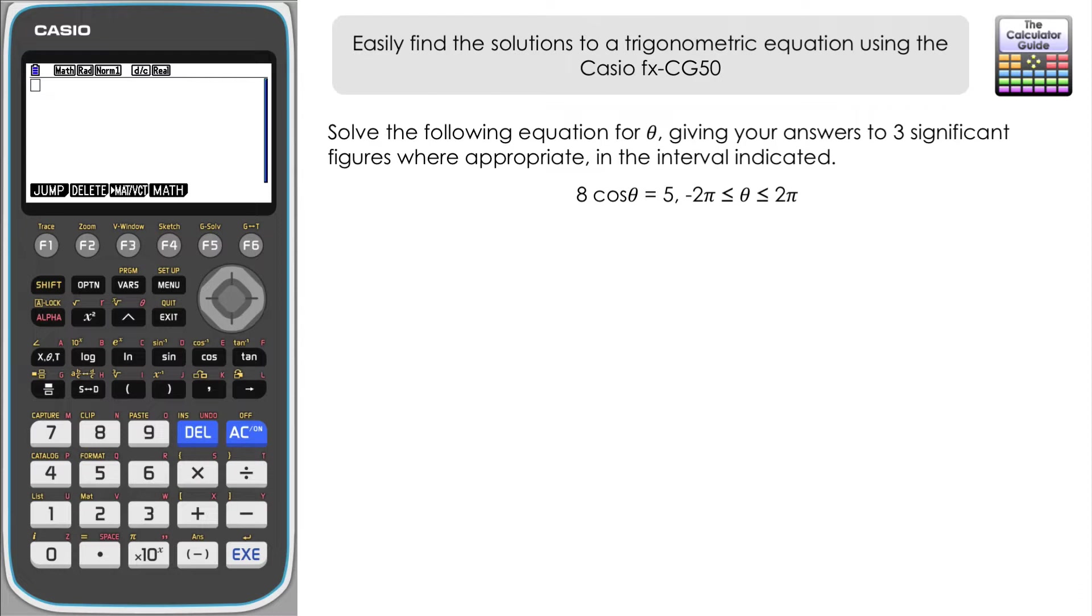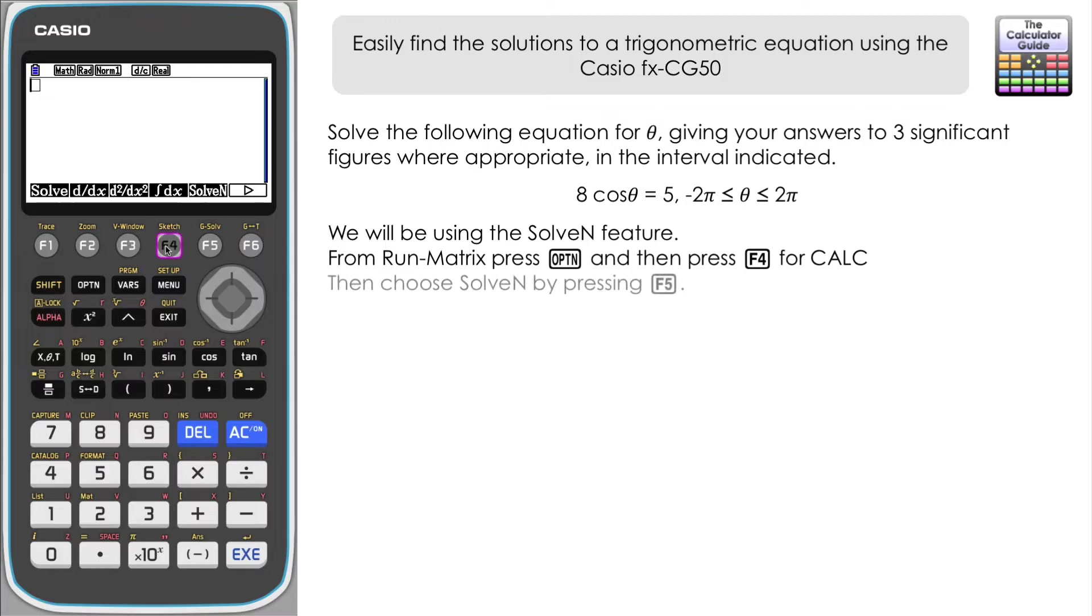Now the feature that we're going to be using on this is SolveN. I'm not quite sure what the N stands for, it might be Solve Numerically or Solve for Numbers because we do get a numerical solution from this. So let's just find out where that is. If you press Option and then we want to choose the option Calc, so it would be F4 for Calc, and then in this menu you can see there's two Solves that are presented here. We want the one on the right, SolveN over here, so that's F5.